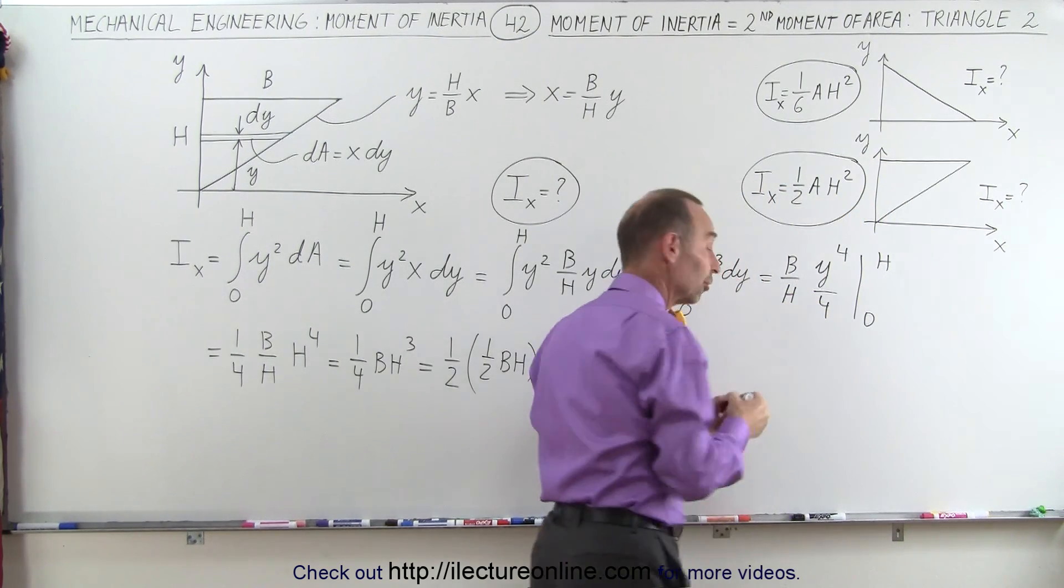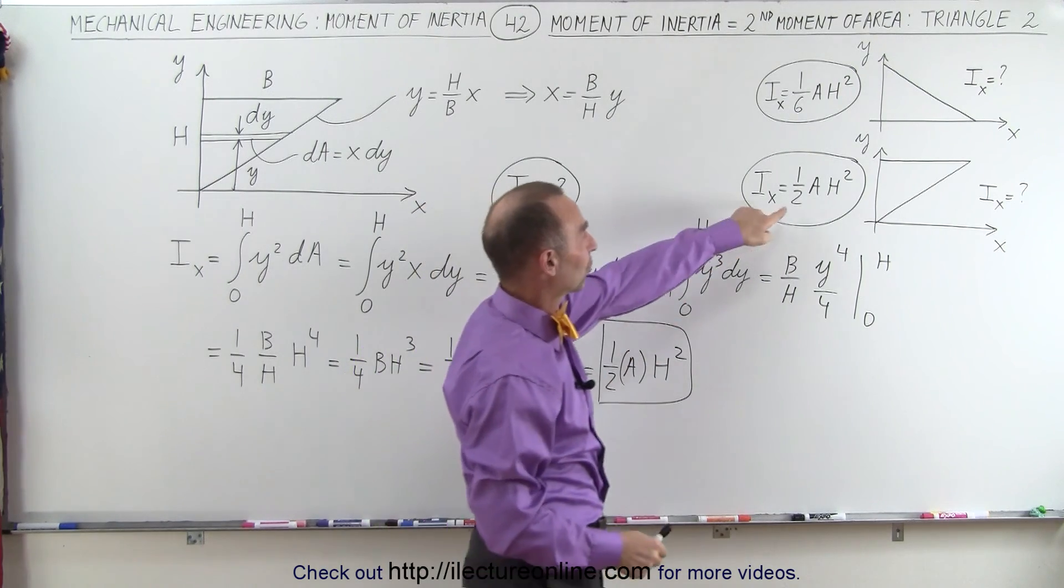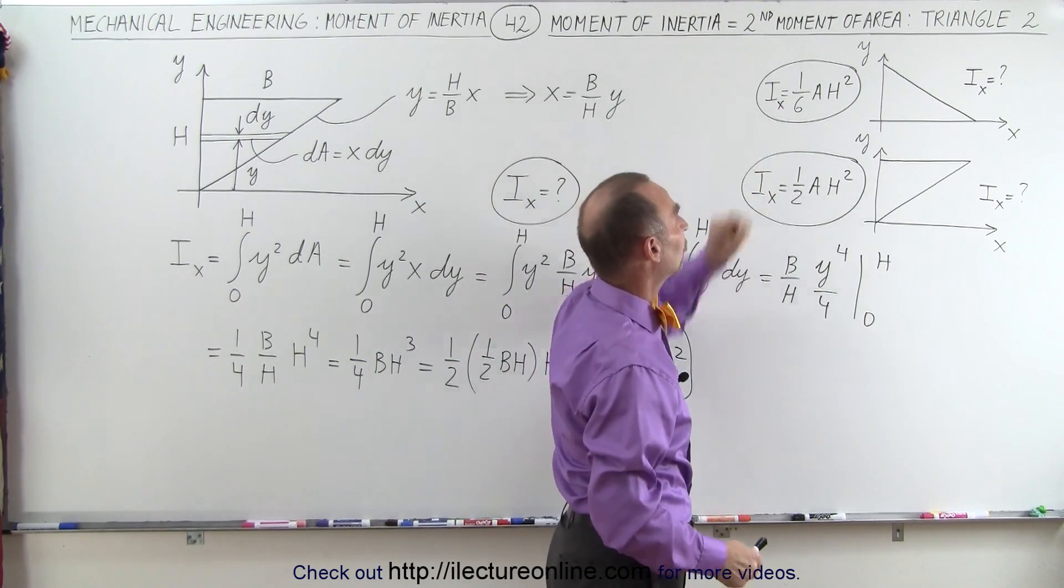And we expect a larger value. Of course, 1 half is much larger than 1 sixth. This is 3 times the moment of inertia of this triangle.